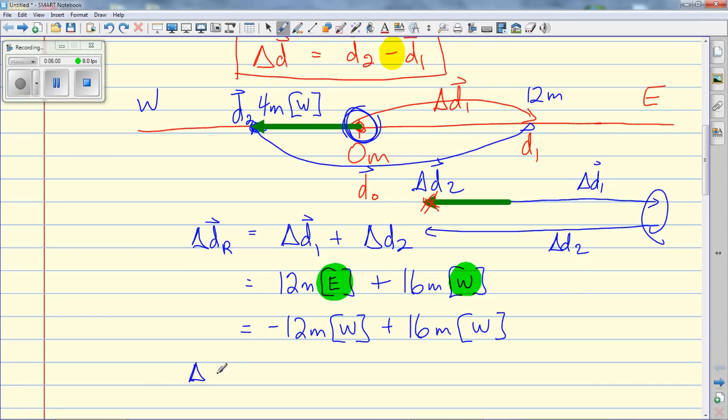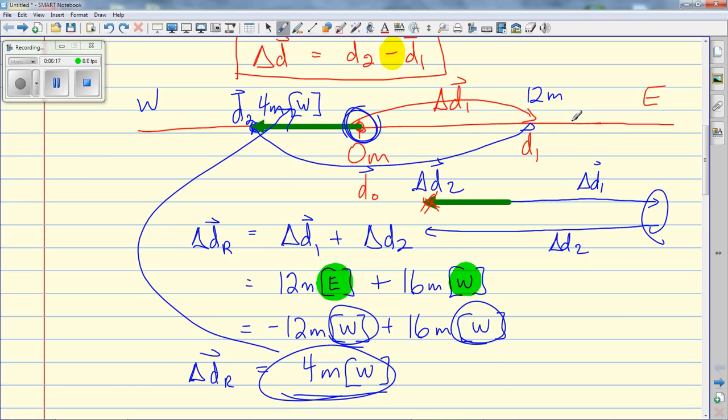Now I can go ahead and do my addition. Negative 12 plus 16 gives me positive 4 meters, and my directions now work because they're the same, and I have 4 meters west, which I certainly should have, so they confirm each other.